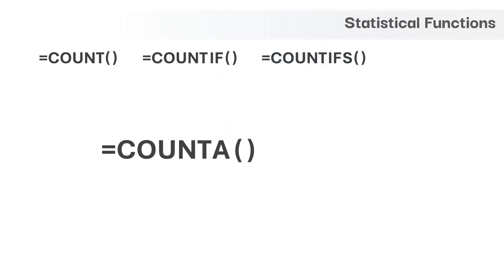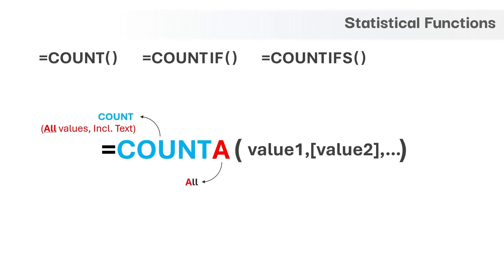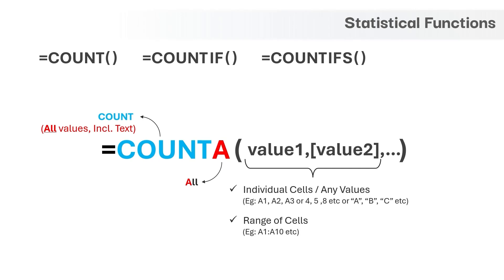The last function is COUNTA, which is similar to COUNT but the key difference is it can count any values including text and boolean values. In other words, this function will count all non-blank cells over a range of data. The letter A stands for 'all'. The input can be any range of cells with numerical and text values. This function will not count blank values. If you want to count blank values, there is a dedicated formula called COUNTBLANK — it's simple enough to try on your own by giving a range as input.